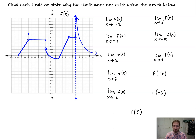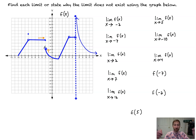The limit as x approaches negative 2 of f(x): we go to negative 2 and notice that as we approach from the left side we approach a y value of 5, and from the right side we approach positive 2. Those are not the same y values approaching from both sides, and therefore the limit does not exist — DNE.